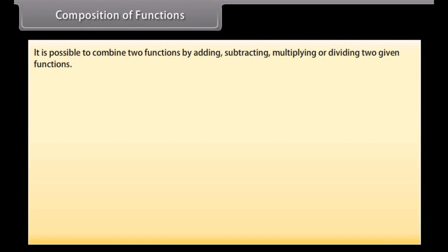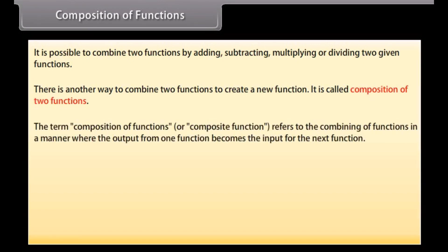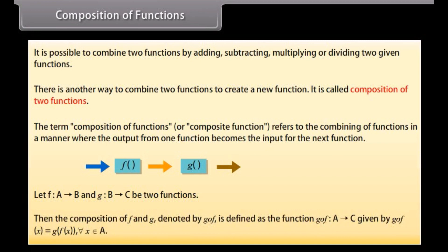Composition of functions: It is possible to combine two functions by adding, subtracting, multiplying, or dividing them. There is another way to combine two functions to create a new function, called composition of two functions. The composition refers to combining functions where the output from one function becomes the input for the next. Let function f from A to B and function g from B to C be two functions. Then the composition of f and g, denoted by g∘f, is defined as g∘f(x) = g(f(x)) for each x belonging to A.